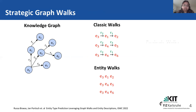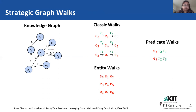The third and last type of walk used in this model is the predicate walk. Here, as the name suggests, we consider only the relations. Starting again from E3, we have R2, R1. Again from E3, we have R2, R3. And then again from E3, we have R2, R1. Here we consider only the initial node, but the rest of the nodes are ignored in this walk.